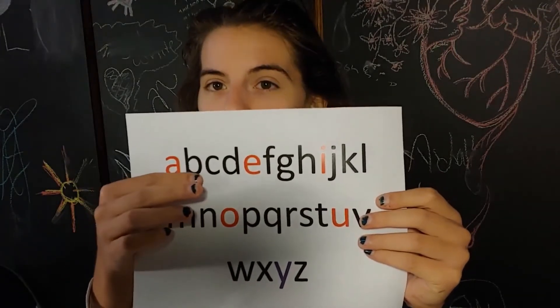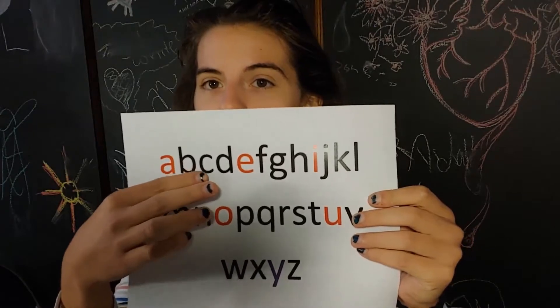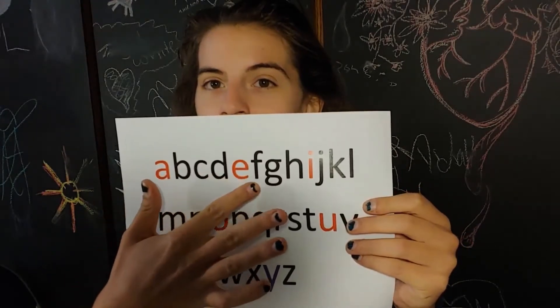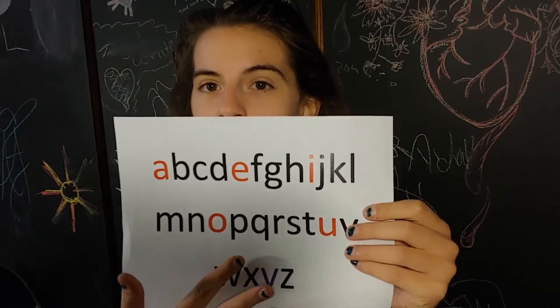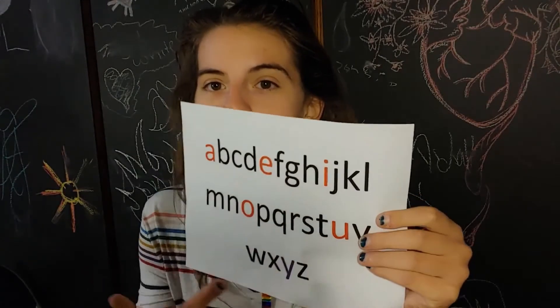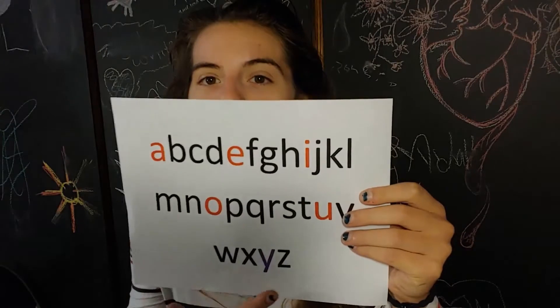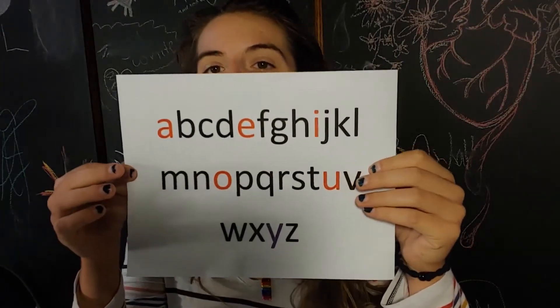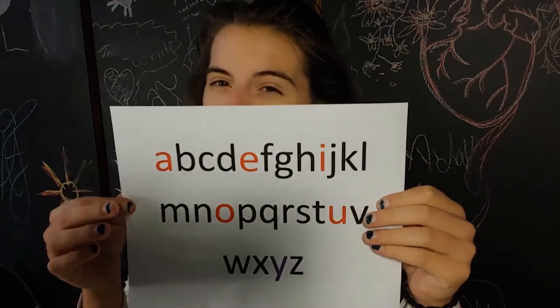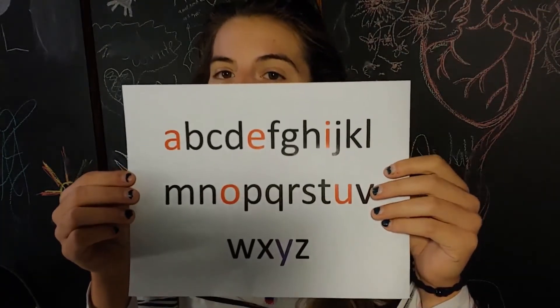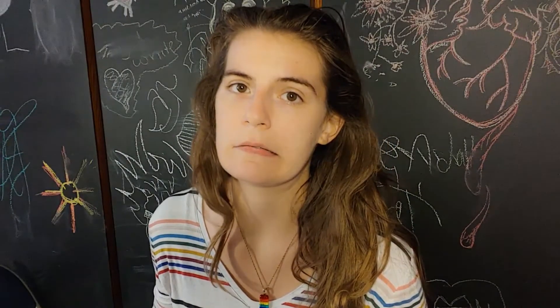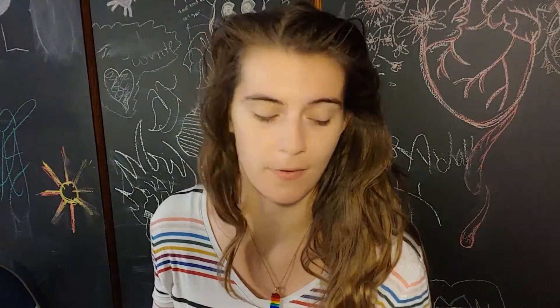So B, C, D, F, G, H, J, K, L, M, N, P, Q, R, S, T, V, W, X, and Z are all consonants. Y is in purple because it's an irregular letter — sometimes it functions as a vowel and sometimes it functions as a consonant.